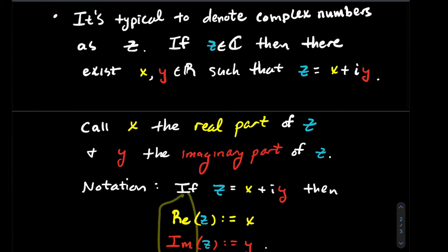We can think about these two things as functions. These are two functions that have a complex input z but give you a real output, either x or y.